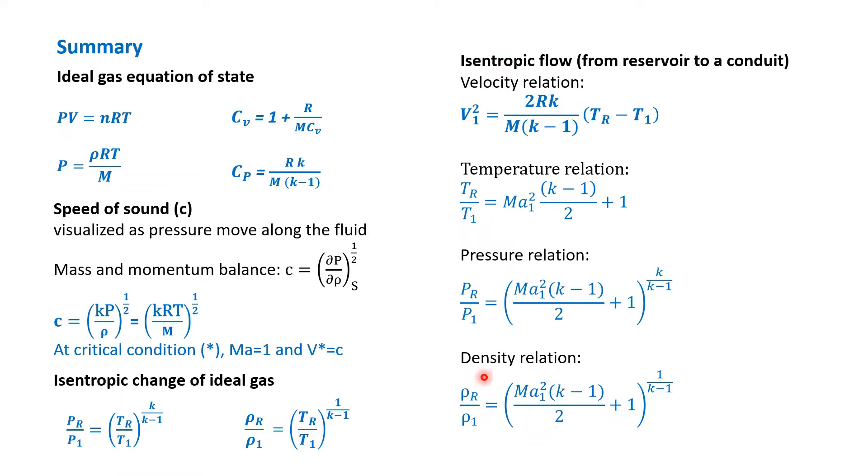We have four correlations here: velocity relationship that links between the velocity at point 1 in the nozzle with the temperature of the reservoir. As long as we know the temperature of the reservoir and the temperature of the nozzle, we will be able to find out the velocity there. Then, based on this equation, by keying in some of the terms we have learned previously, we get a few other equations: temperature relationship, pressure relationship, and density relationship. As long as we know well the equations, I think it won't be a big problem to address a few examples given in the following slides.